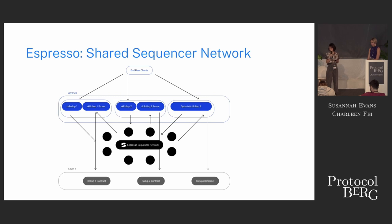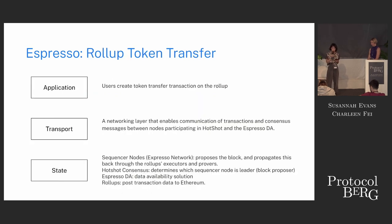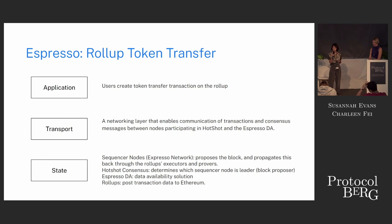Looking at Espresso through the modular interoperability framework: on the application side, users are creating token transactions on the rollup. On the transport side, it looks a bit different — transport here really means the networking layer between nodes participating in consensus (the sequencer nodes and the Espresso DA), enabling communication of transactions and consensus messages between all these actors. On the state level, there are the sequencer nodes, HotShot consensus, Espresso DA, and rollups that eventually post transaction data to Ethereum.